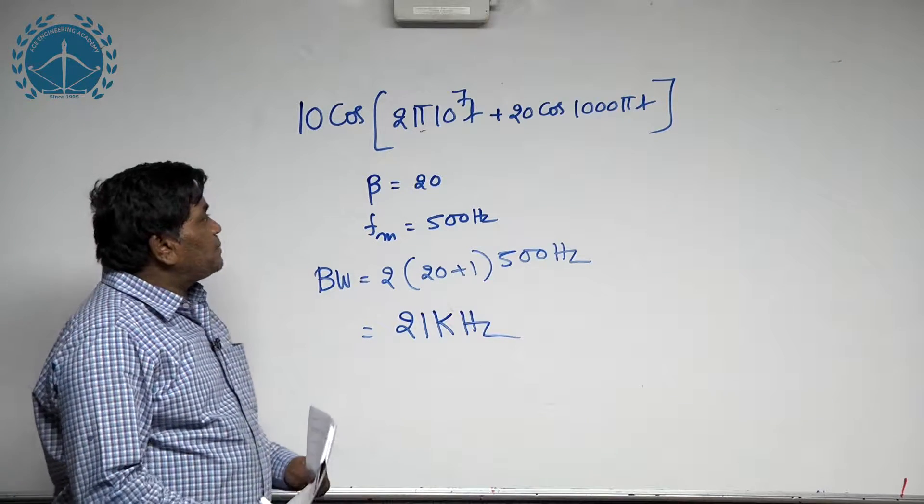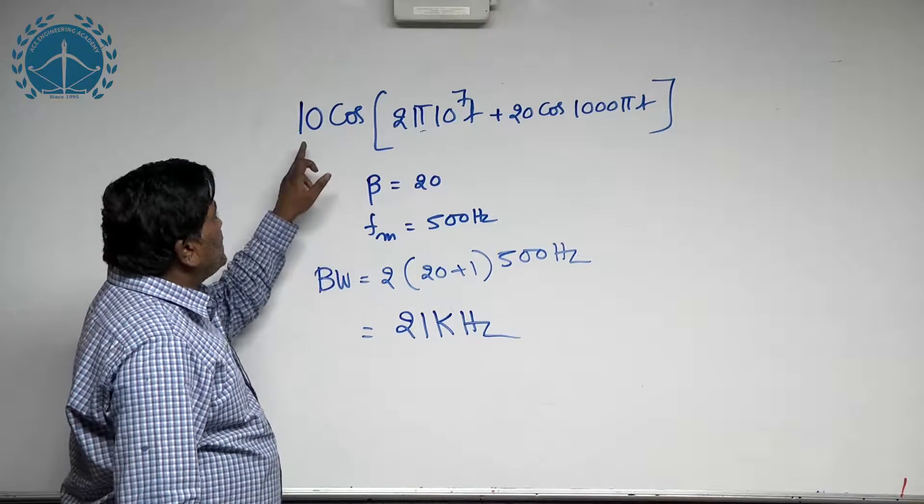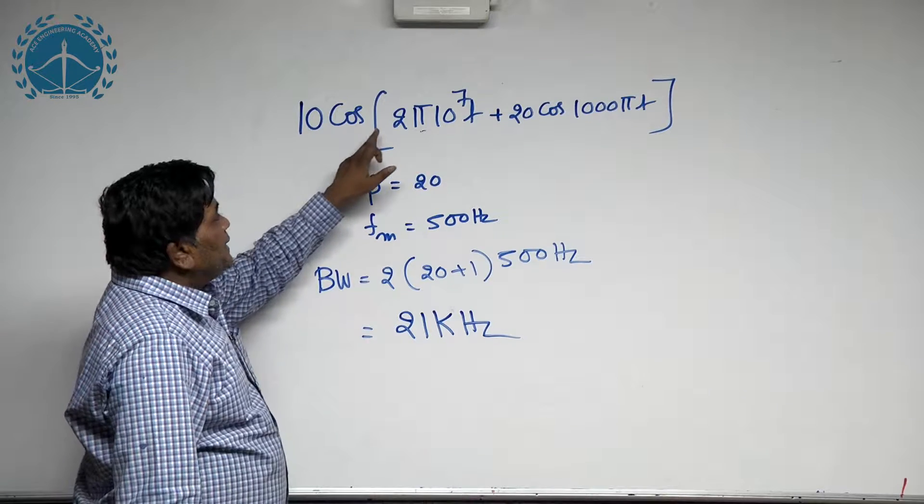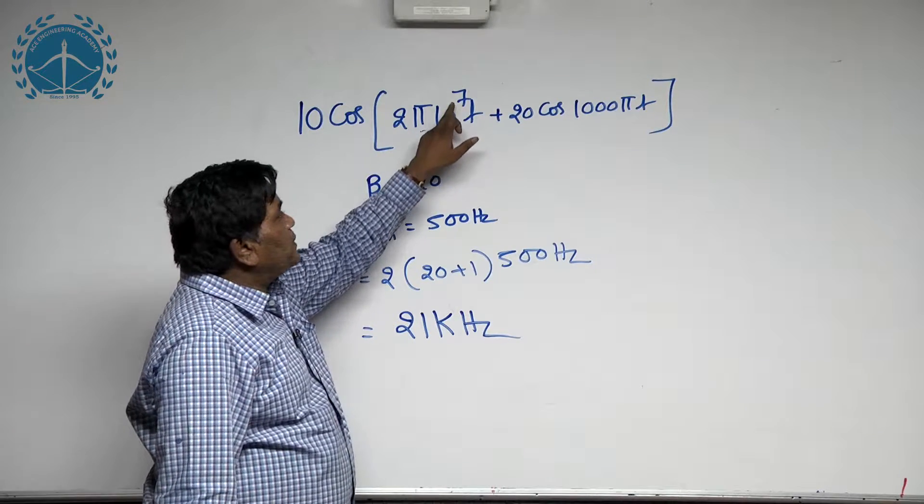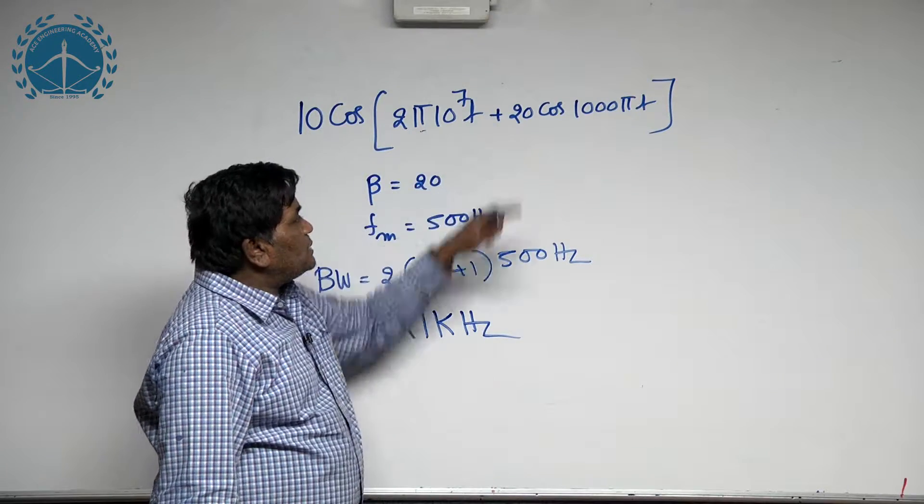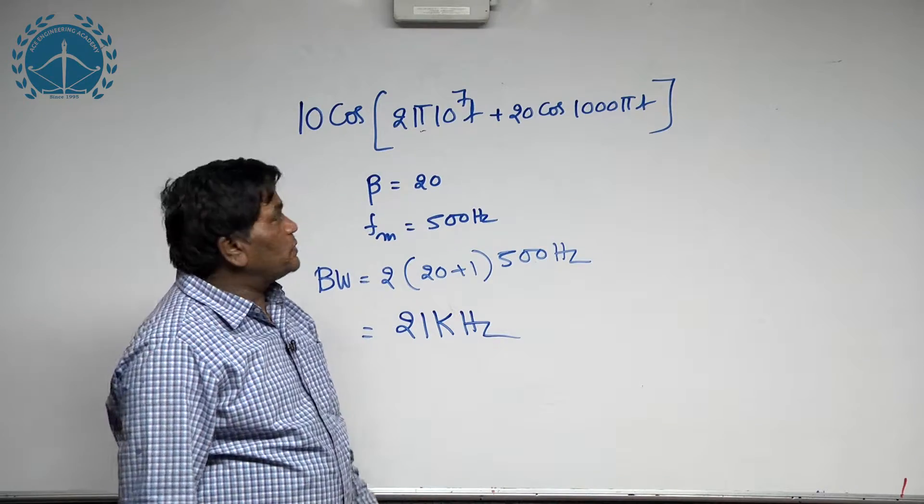In the question, an angle modulated signal is given as 10 cos 2π 10 to the power 7t plus 20 cos 1000 πt.